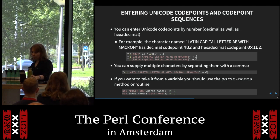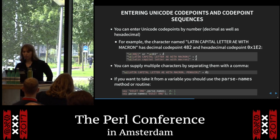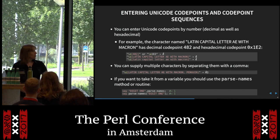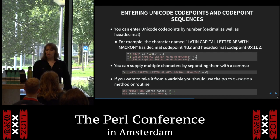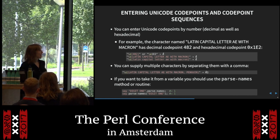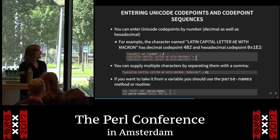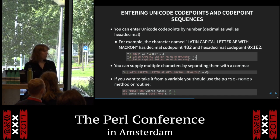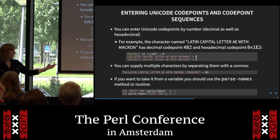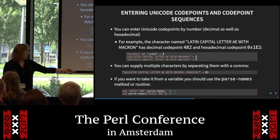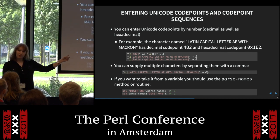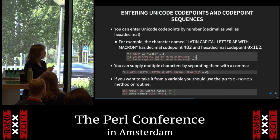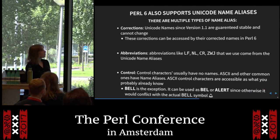There are many different ways of entering Unicode code points in Perl 6: by decimal form, hexadecimal form, or by name. I recently made name entry case-insensitive. You can supply multiple characters by separating them with a comma. If you want to take a value from a variable and turn it into a code point, you can use parse-names, since the \c form is compiled and would require eval.